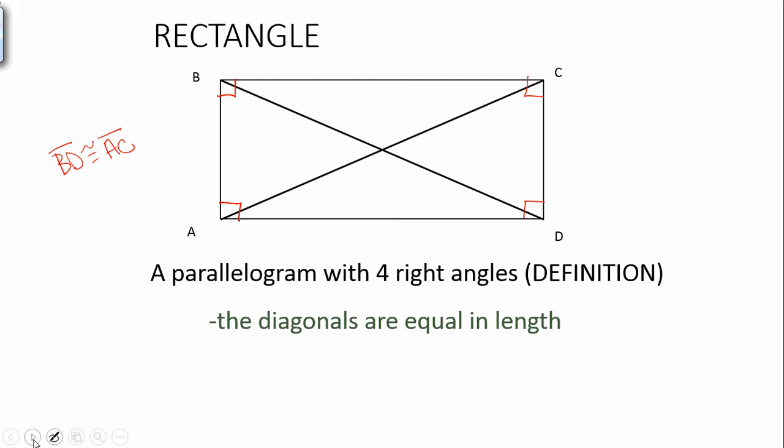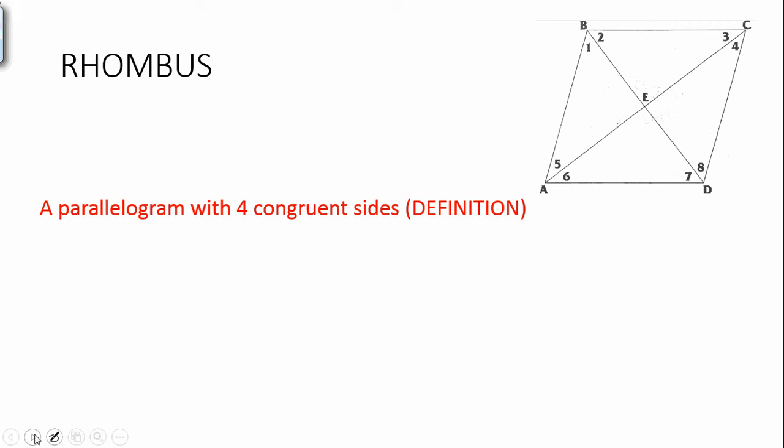Now, another type of quadrilateral we're going to be looking at is a rhombus, or rhombi for plural. A rhombus is a parallelogram with four congruent sides. So again, we're talking about a parallelogram that has all of those parallelogram properties, parallel sides and opposite angles congruent and consecutive angles supplementary.